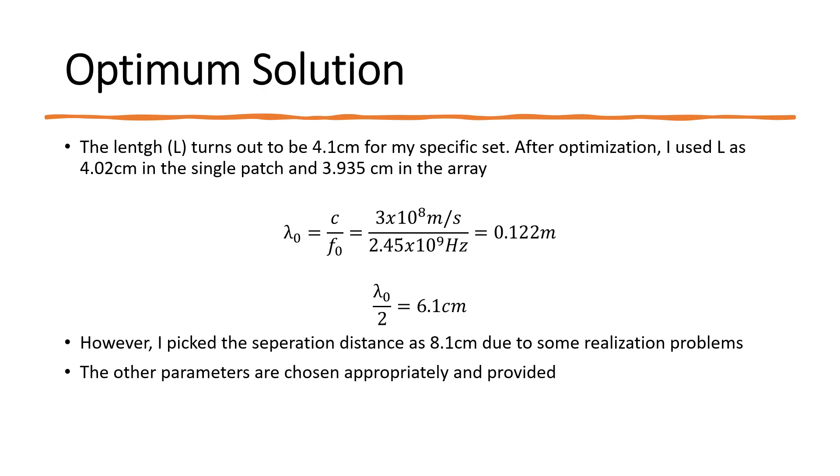In order to apply these, we first need to find out the free space wavelength and half of it. The half of the free space wavelength turns out to be 6.1 cm.